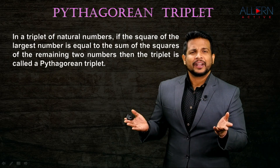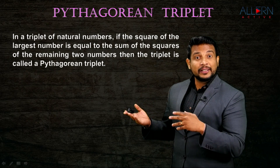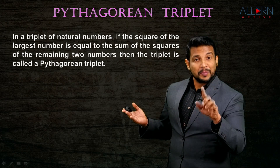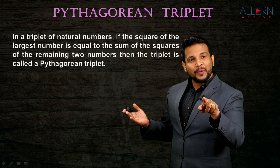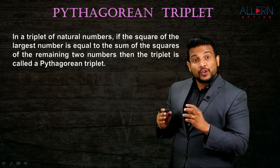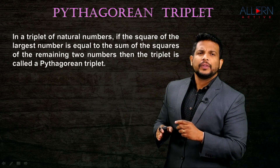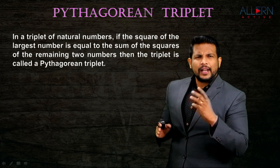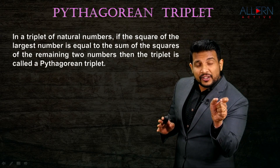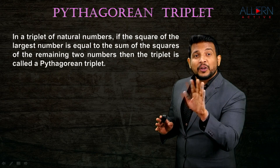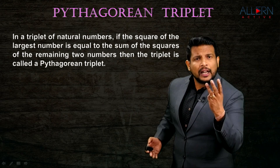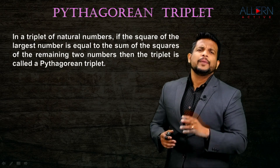That's very easy. When we talk about Pythagoras theorem, we said the square of the hypotenuse - and remember, in a right angle triangle, the hypotenuse is the longest side. That is why the same applies here: a triplet is said to be a Pythagorean triplet if the square of the largest number is equal to the sum of the squares of the remaining two numbers.